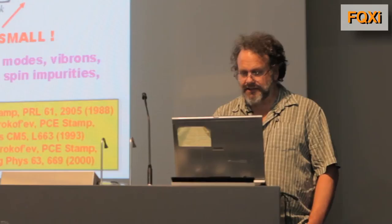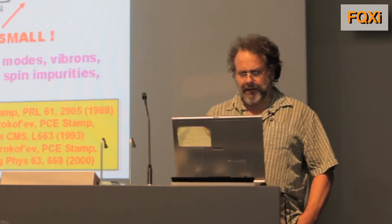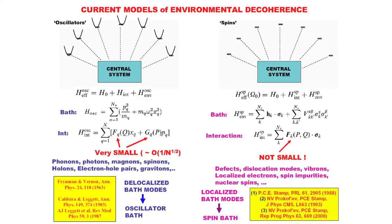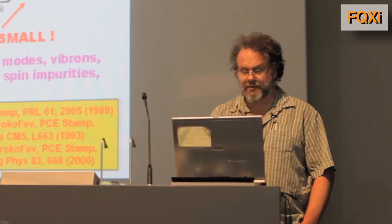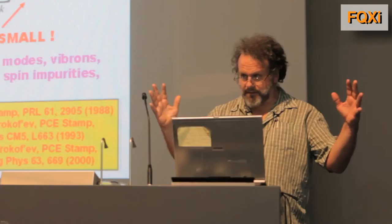This means there are essentially two kinds of environment that people like to talk about when discussing this quantitatively. The first one imagines that we have some central degree of freedom that we're interested in — it could be, for example, the displacement coordinate of a gravity wave bar, or some quantum computer with more degrees of freedom. We model two kinds of environment: first, we imagine coupling the central system to a set of oscillators, which are supposed to model delocalized modes in the environment — phonons, electrons, etc.